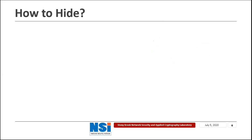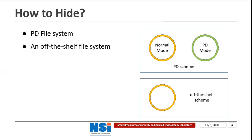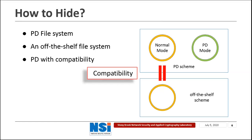Let's see a simple example. Assume we have a PD scheme which is a file system with two modes: the normal mode and the PD mode. Besides, we have another off-the-shelf file system. More importantly, we assume that the normal mode in the PD scheme has an identical layout as the off-the-shelf scheme. As the PD scheme ensures that the adversary cannot distinguish whether normal mode or PD mode is used, and the normal mode has the identical disk layout as the off-the-shelf file system, the adversary cannot distinguish whether the PD scheme or the off-the-shelf file system is used. We call this kind of PD schemes as PD schemes with compatibility.